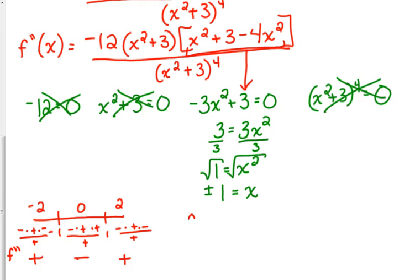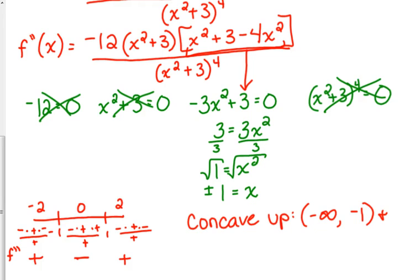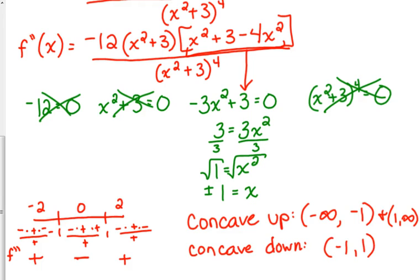So we are concave up from negative infinity to negative 1, and from 1 to infinity. And we are concave down between negative 1 and 1.